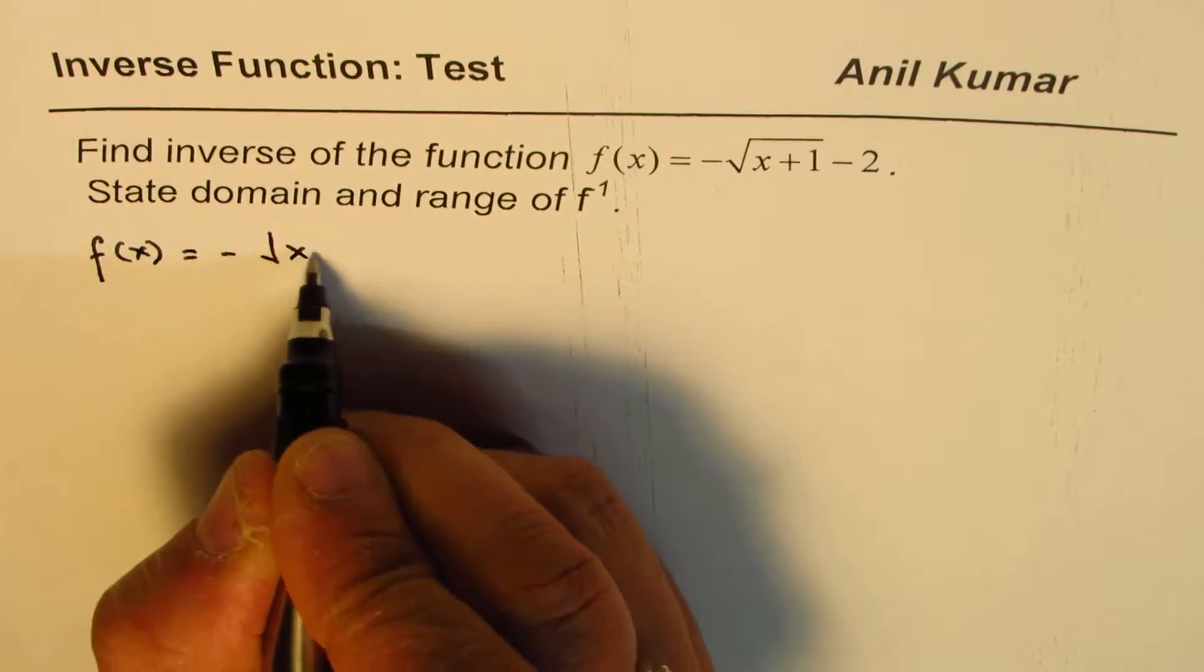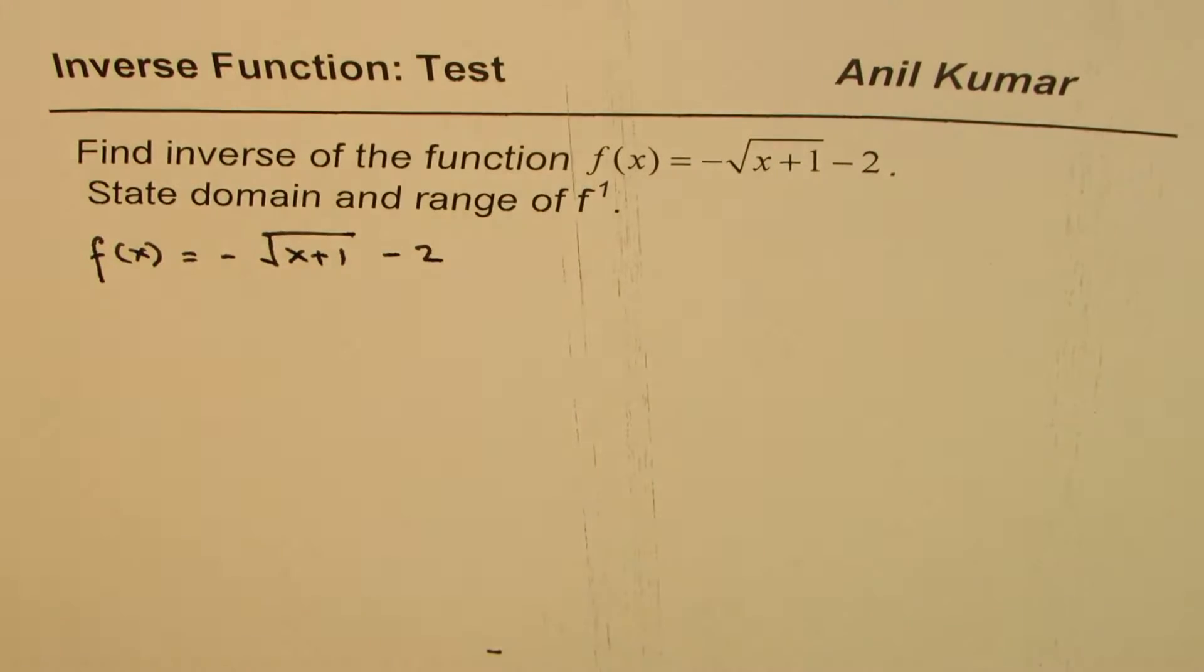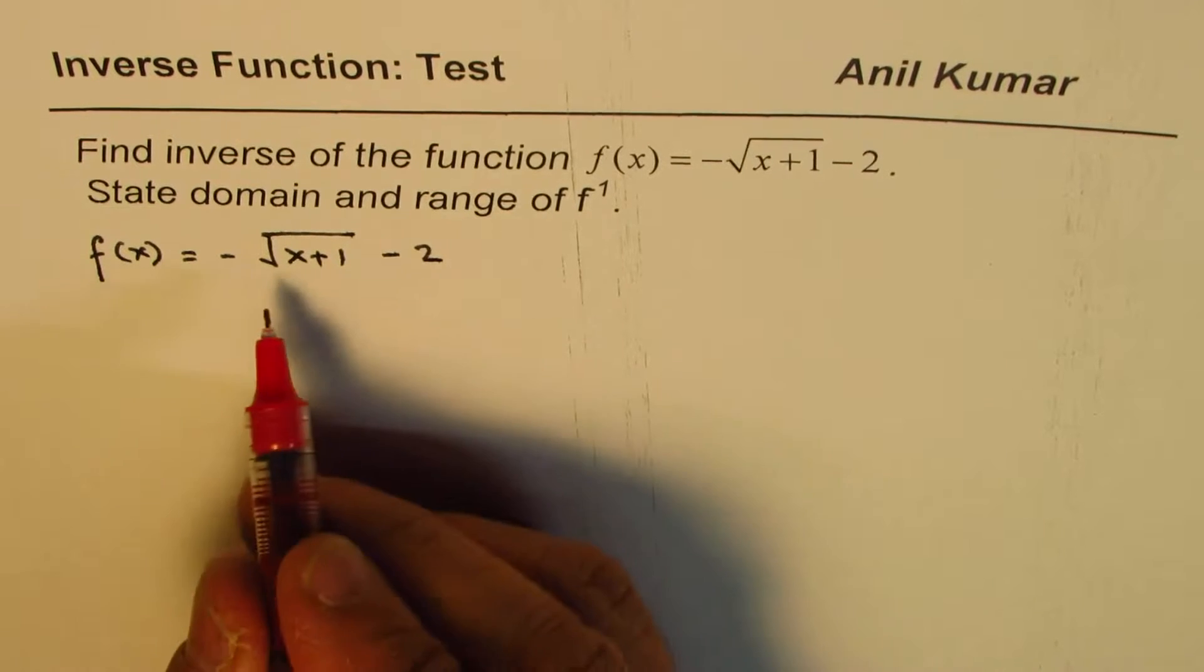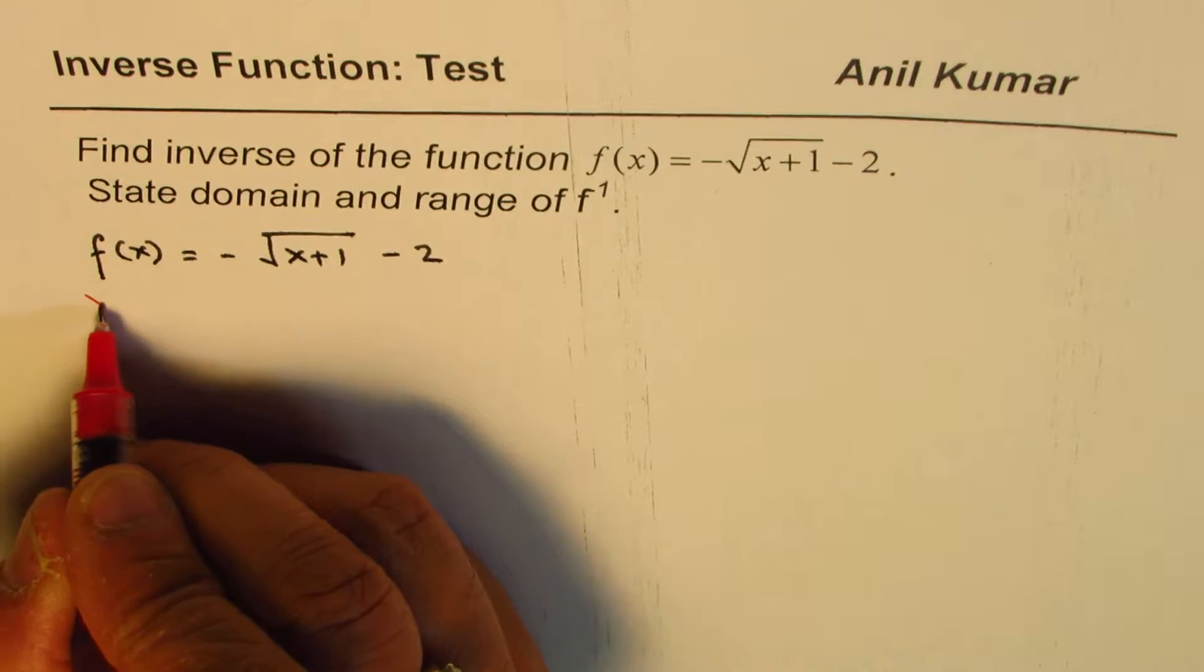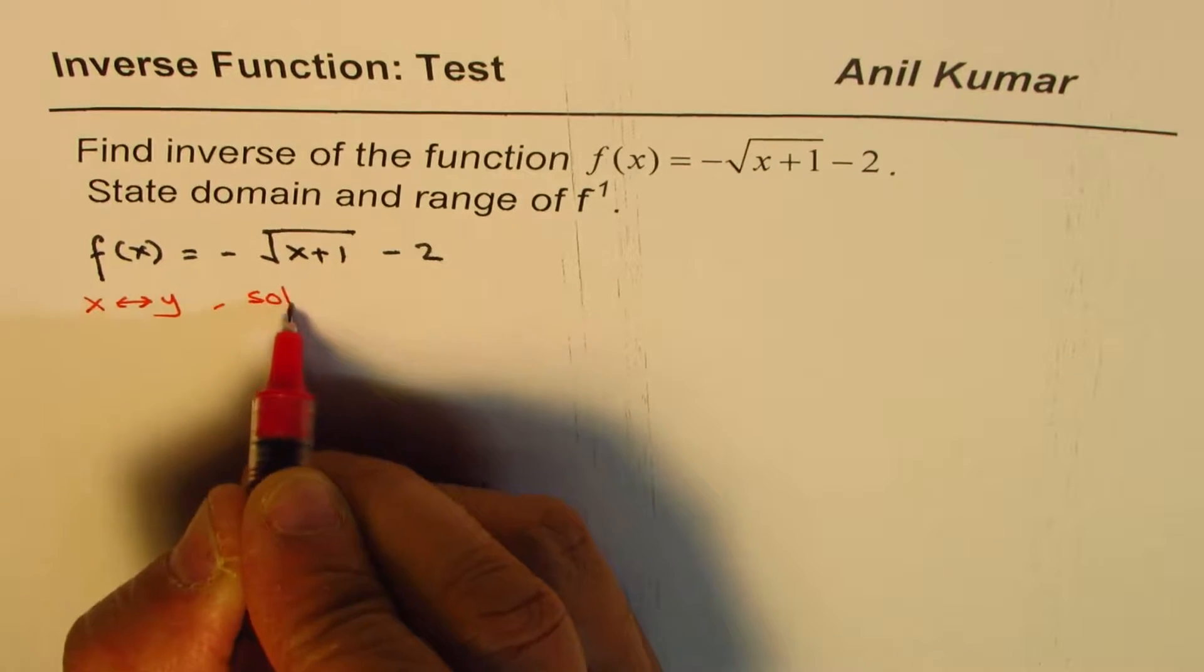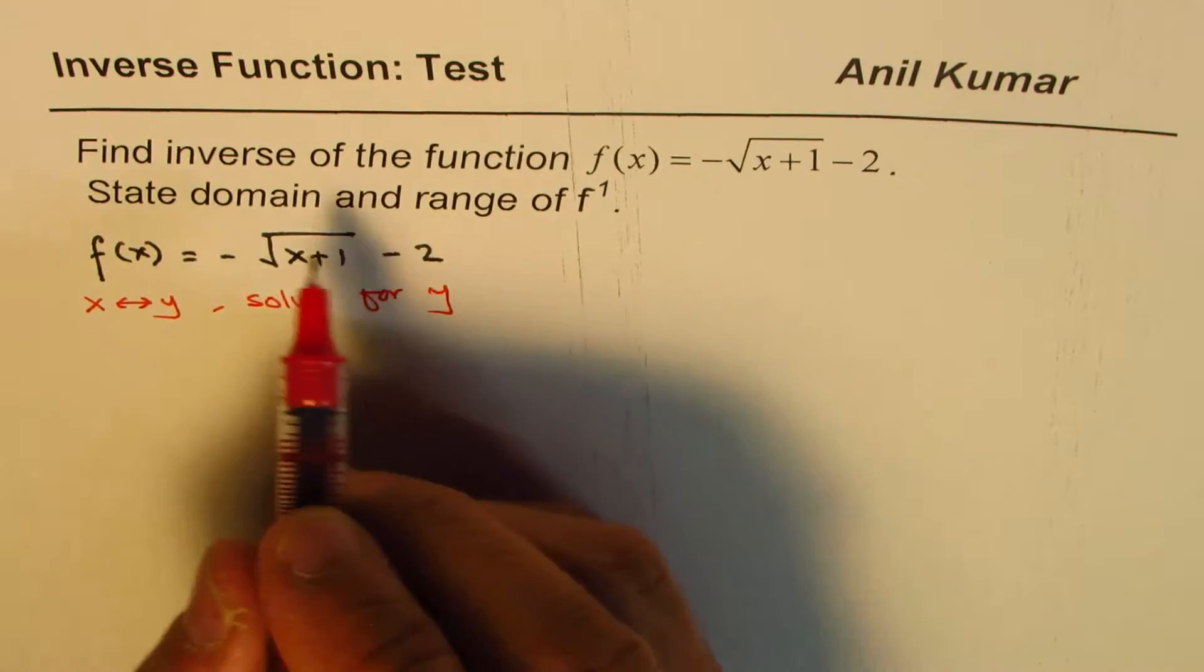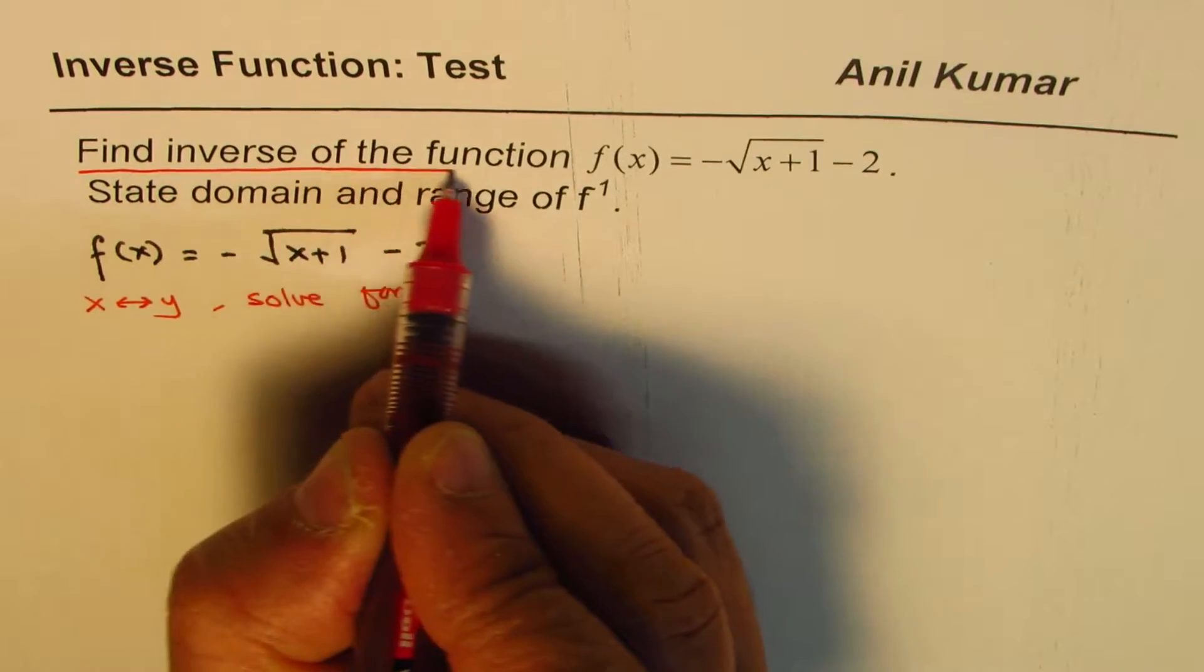So the steps involved are, as you know, we have to swap x and y and then isolate y. So those are the steps involved. So what we have to do here is we have to interchange x and y and then solve for y. So these are the steps to find inverse of the function.